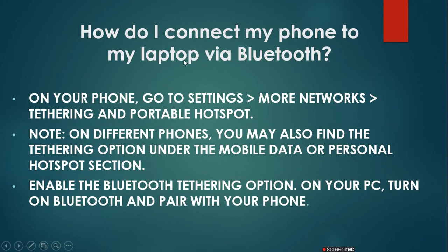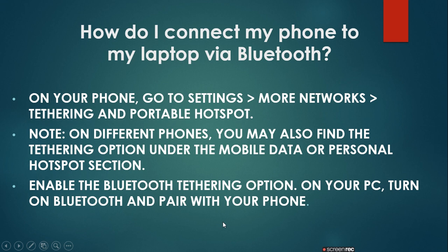How do you connect your phone to your laptop via Bluetooth? On your phone, go to Settings, then More Network, then Tethering and Portable Hotspot. Note: on different phones, you may also find the tethering option under Mobile Data or Personal Hotspot section. Enable the Bluetooth Tethering option. On your PC, turn on Bluetooth and pair it with your phone. It is necessary that both devices have Bluetooth capability. If the PC or laptop does not have Bluetooth, then you must use an external Bluetooth adapter to connect.